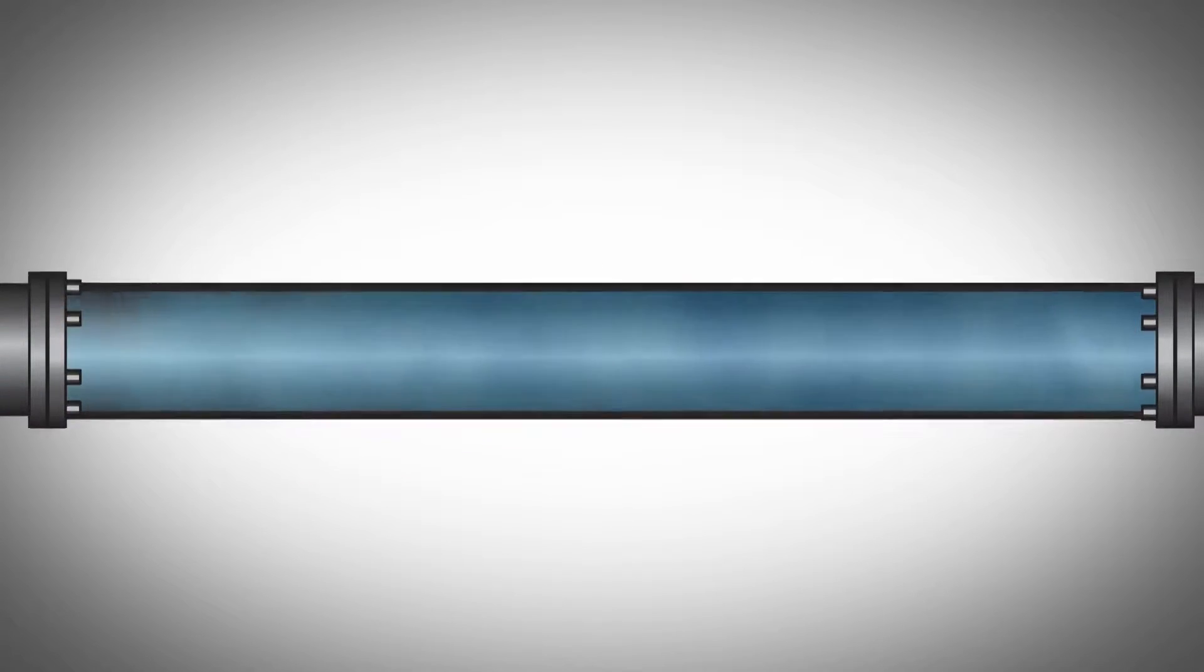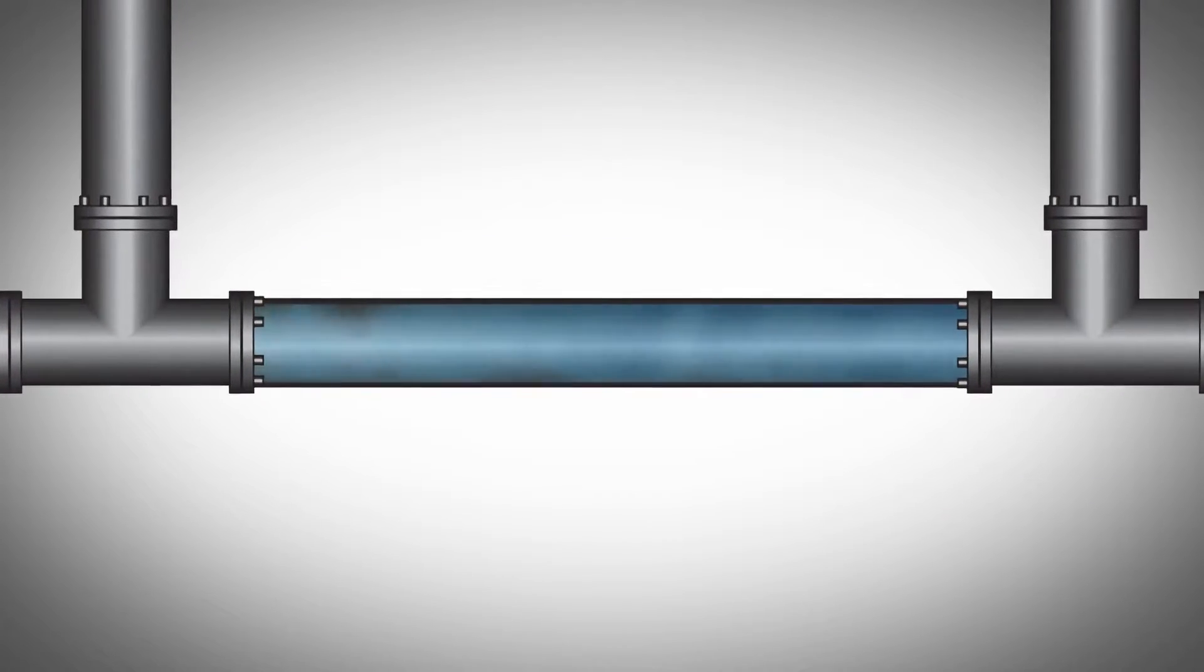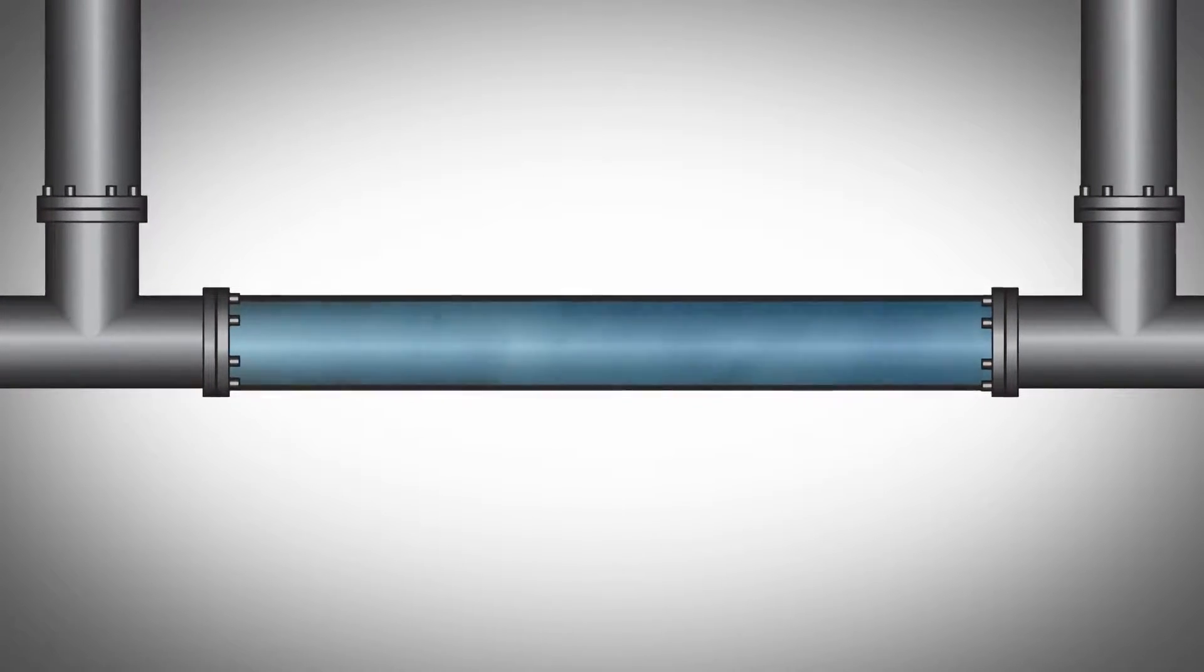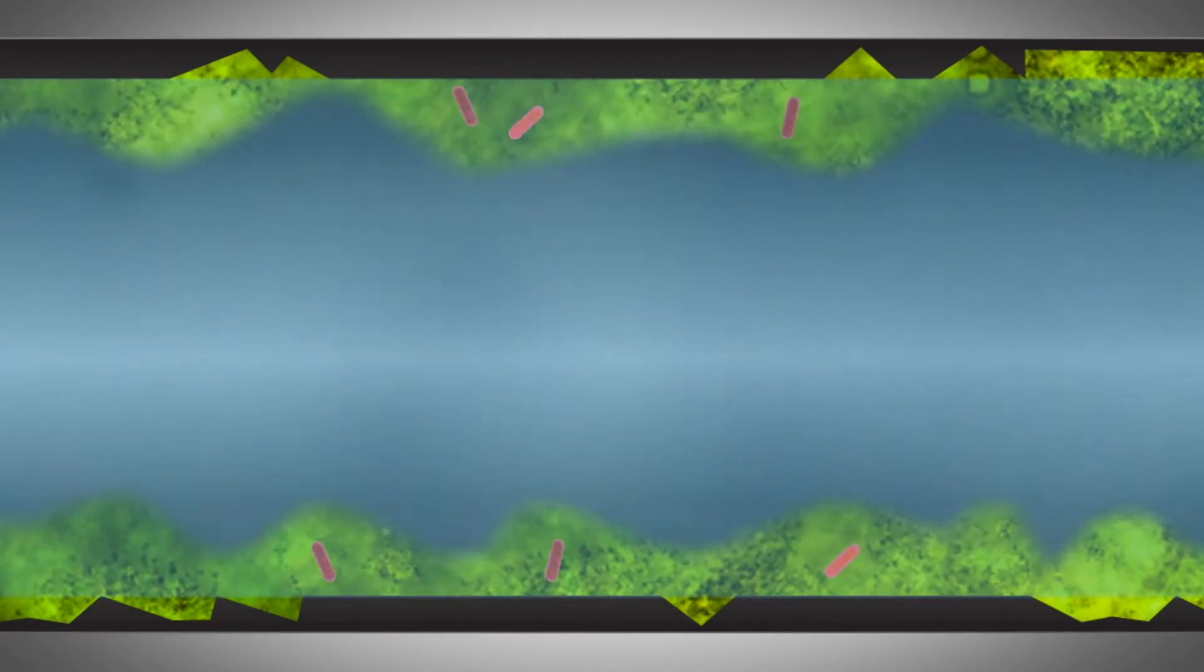However, a majority of the microorganisms in an industrial water system are not planktonic, but instead are found in biofilms on surfaces throughout the system.